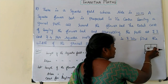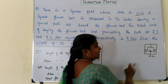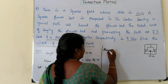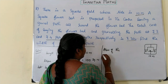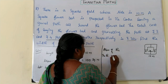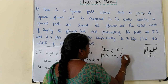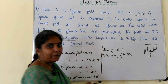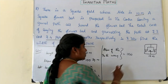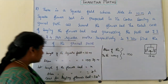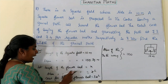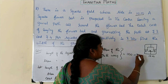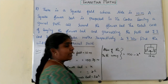The area of the pathway is obtained by subtracting the area of the flower bed from the total area. So the area of the pathway is 100 minus x squared.